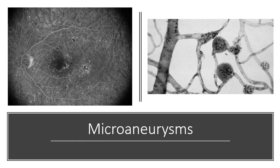It's quite easy to get microaneurysms confused with dot hemorrhages, which are more easily seen on the retina because they're actually larger, but they're quite similar in appearance.